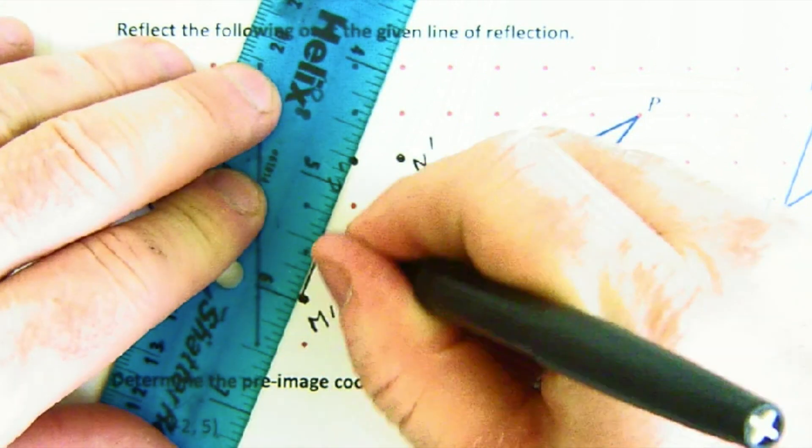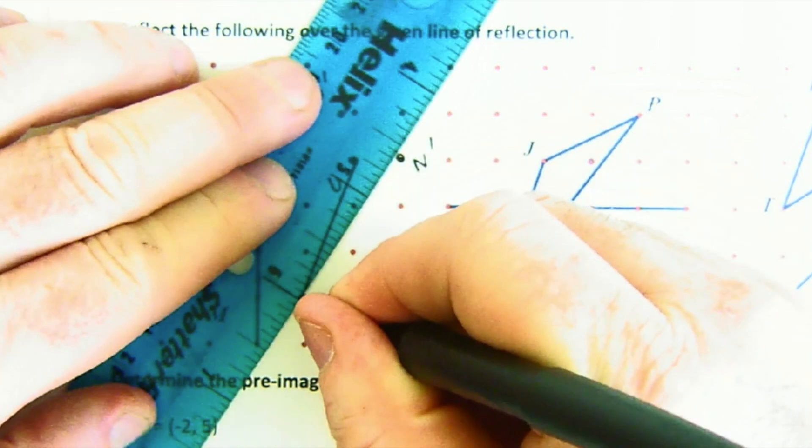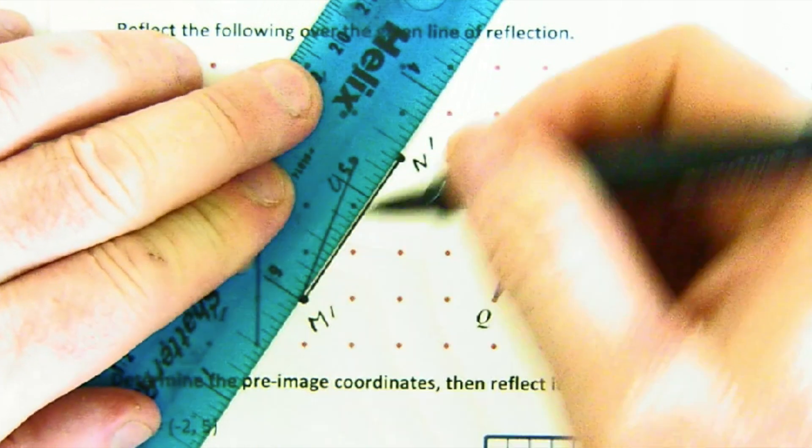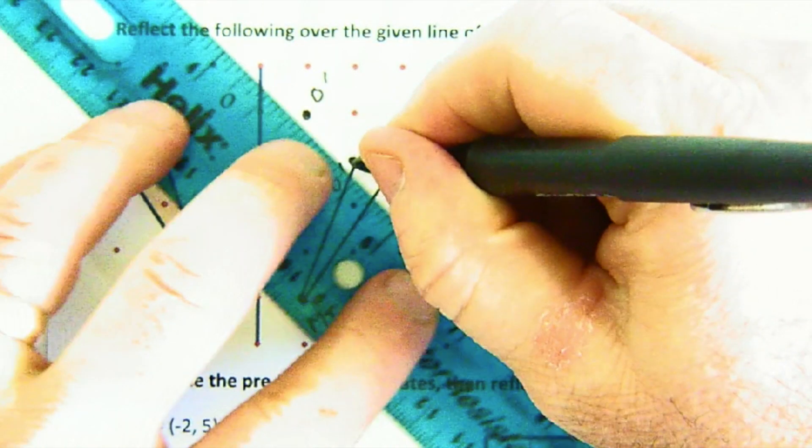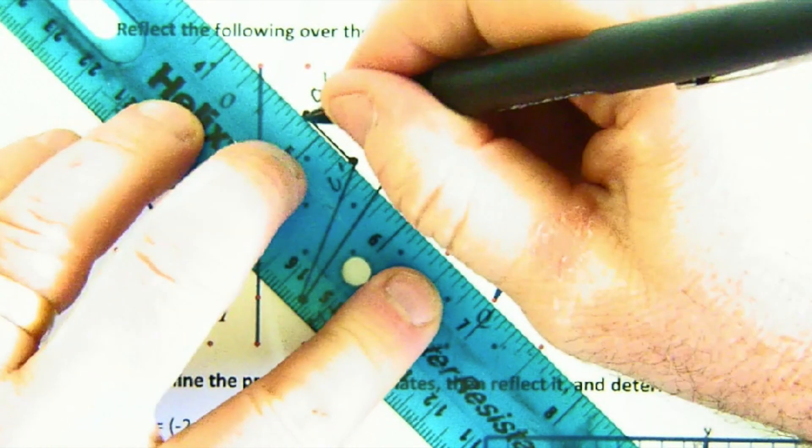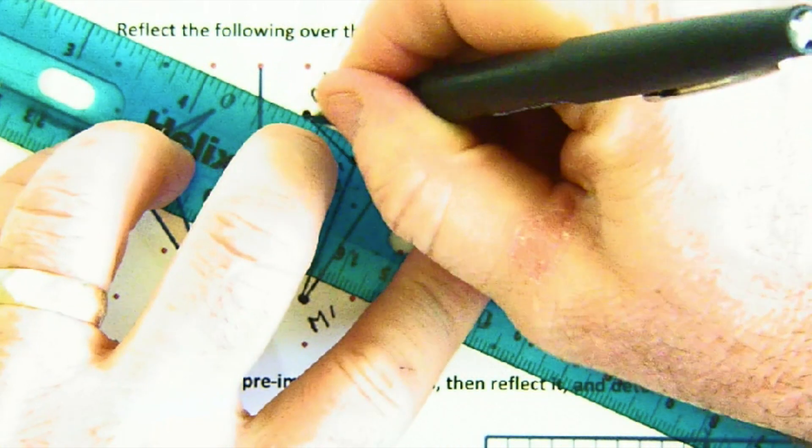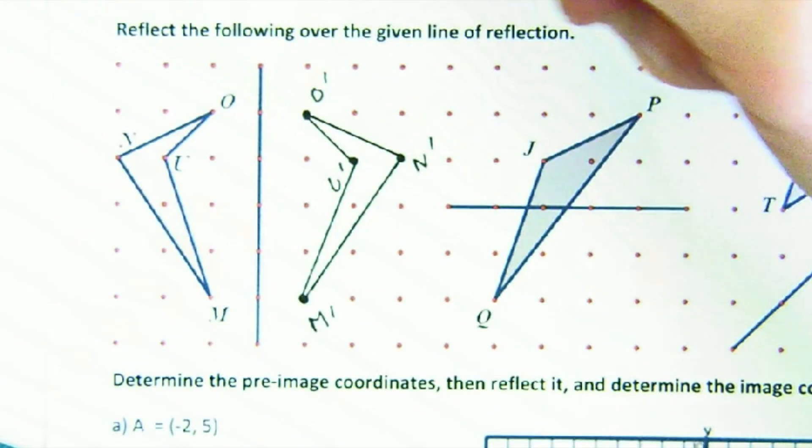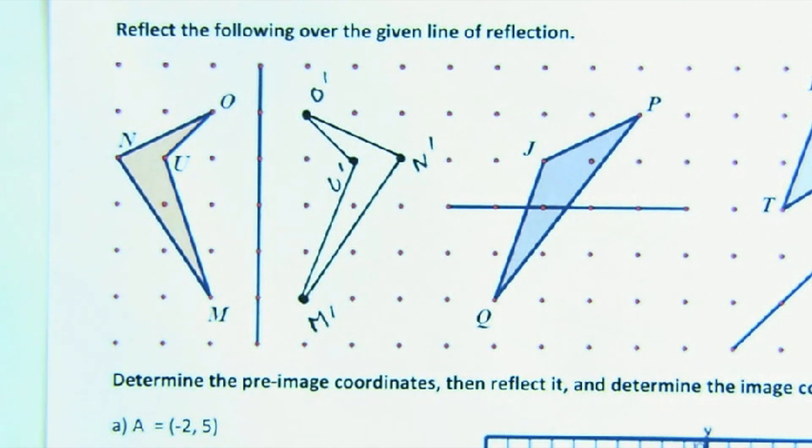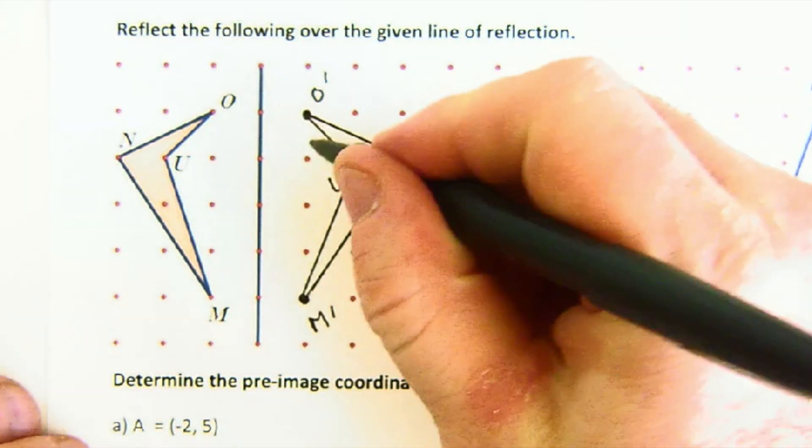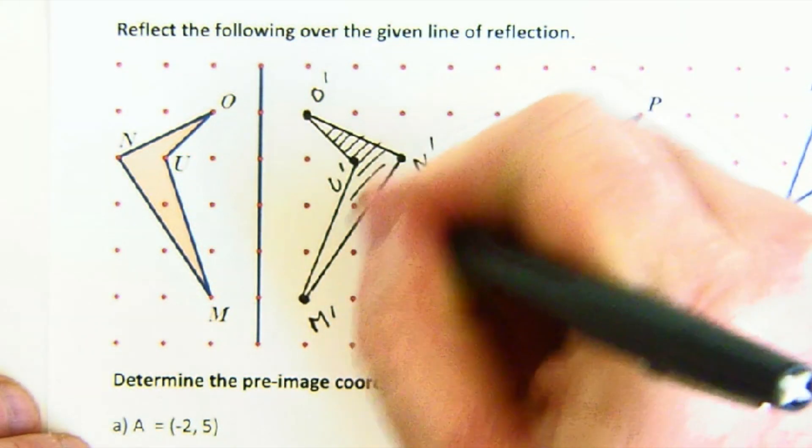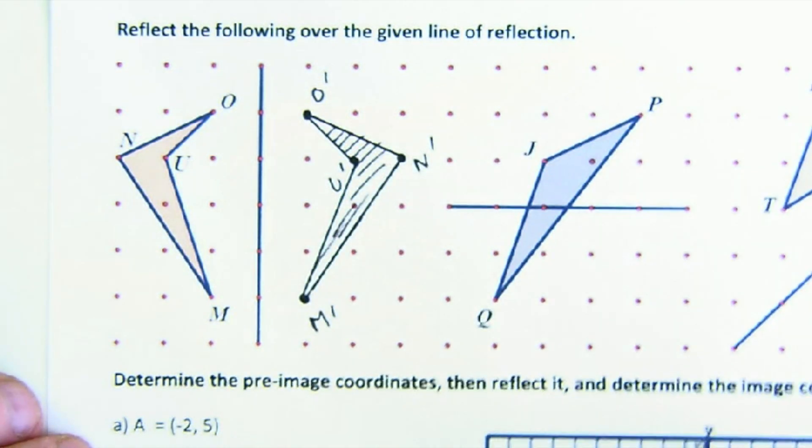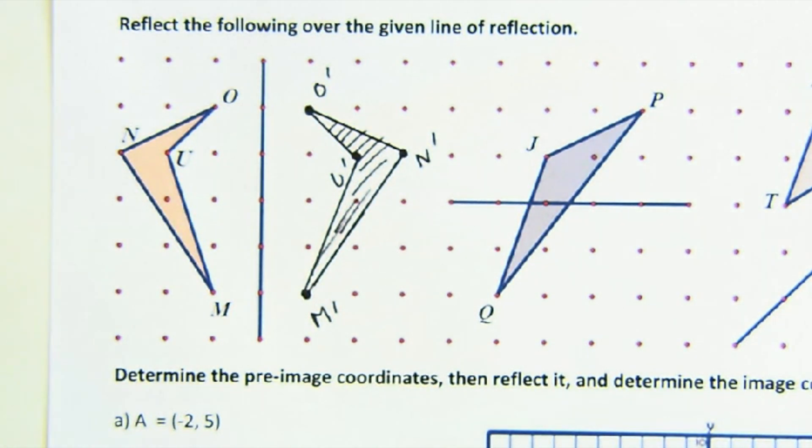I'm under the belief that you and I do reflections much easier than rotations because we're built in a reflection manner. Our body has line symmetry to it, or near line symmetry to it, and so you and I are fairly good at reflections.